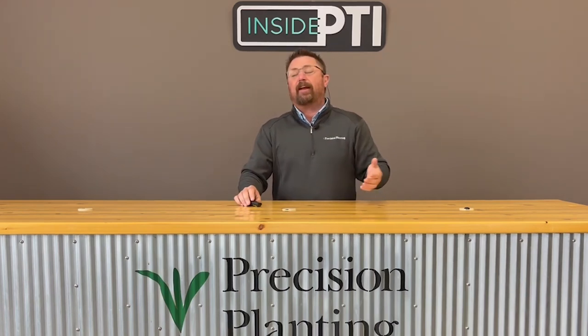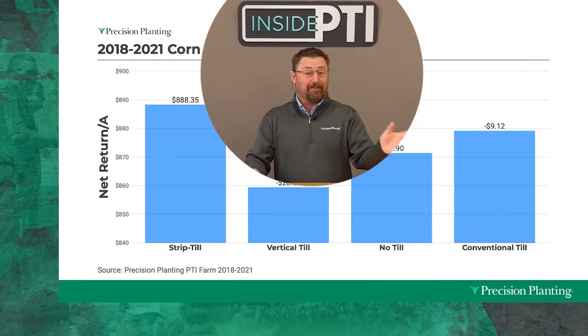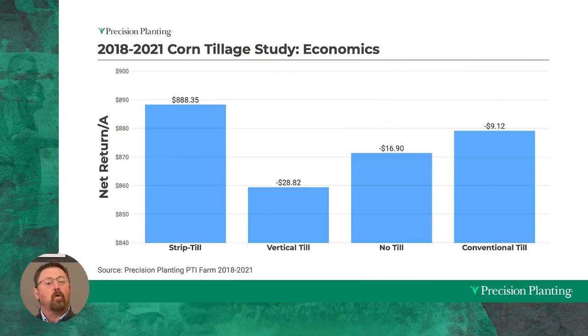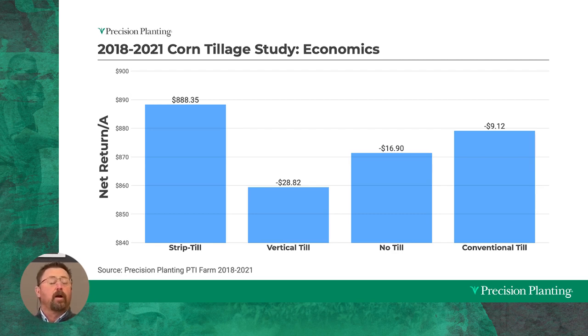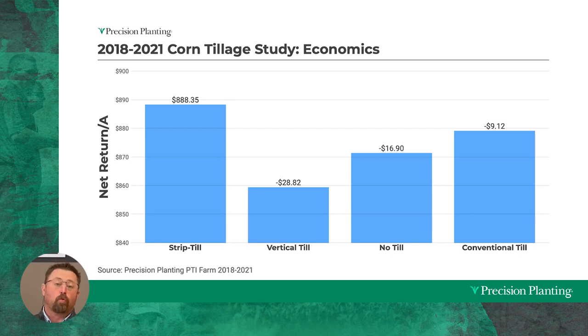Let's look at the differences here at the PTI Farm. One of the things I really like is we're starting to generate long-term data — we've been here since 2018, so we've got four years of harvestable data. In corn, we've seen strip till offer us the highest net returns. Conventional tillage came in within about a nine dollar and twelve cent difference of strip till — real close. No-till comes in within about seventeen dollars per acre. Vertical till was the lowest at twenty-eight dollars and eighty-two cents behind strip till. Again, this is with just tillage factored in — no fertilizer in the bands with strip till.